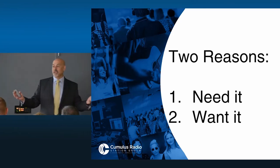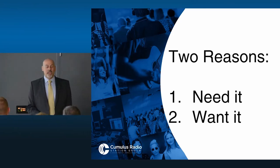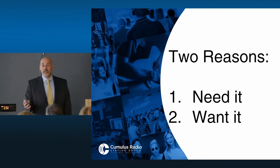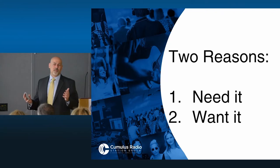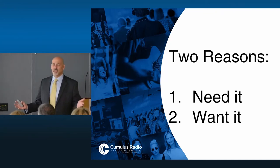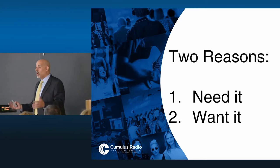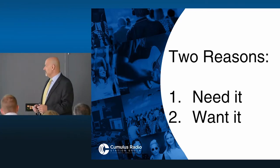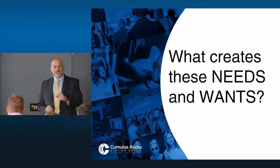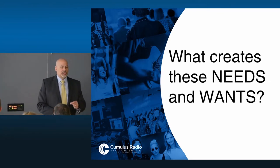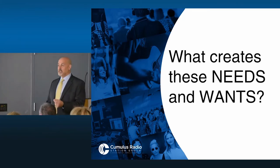We happen to be at a Giant this morning — we need groceries. That's a need. And there are certain things that we want but don't necessarily need — we may want a Harley-Davidson motorcycle, we may want another piece of jewelry, we may want a new watch. So let's dive a little deeper into what really creates those needs and wants, because something's got to cause us to need and want something.